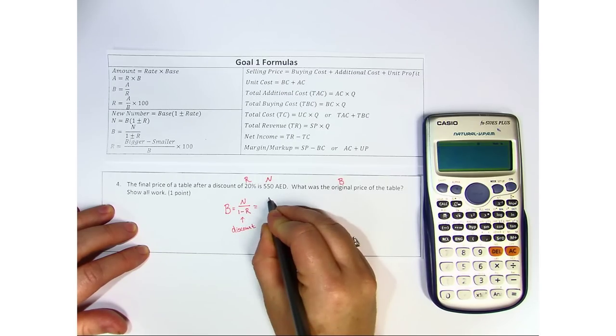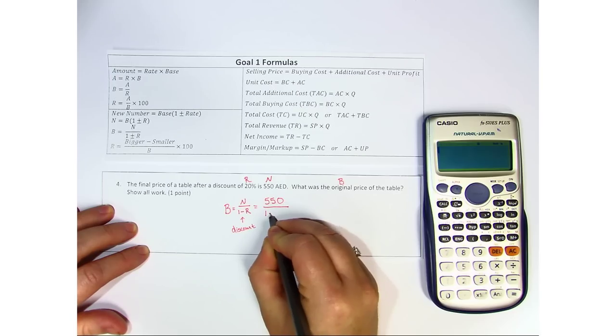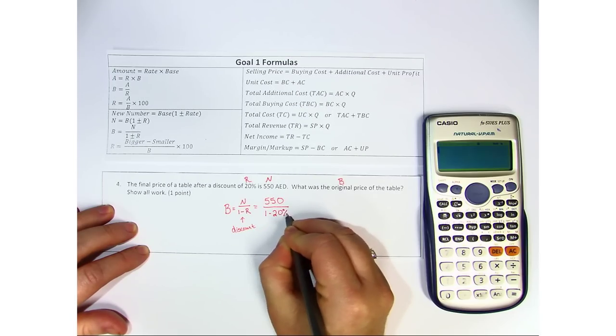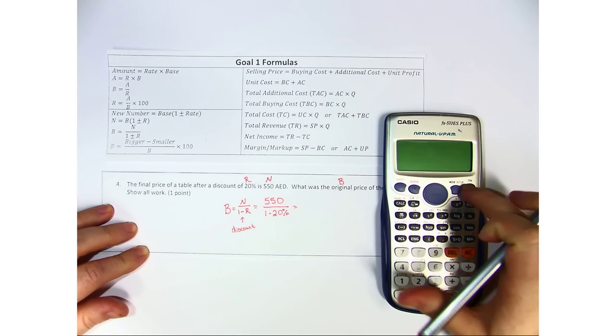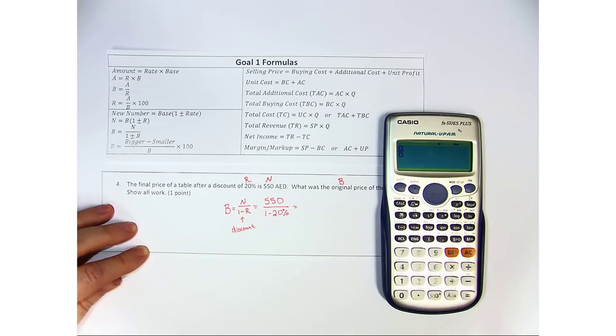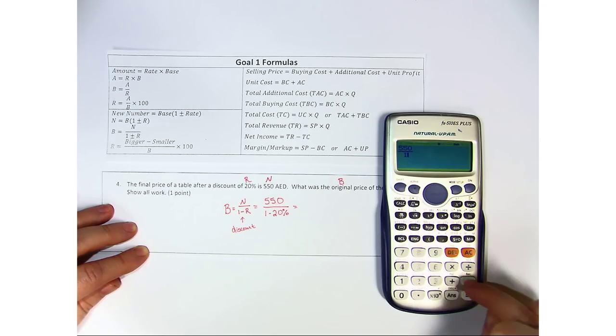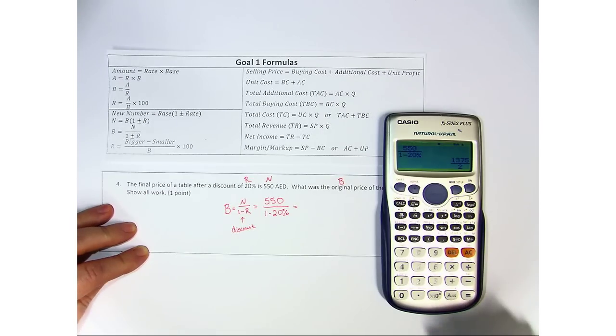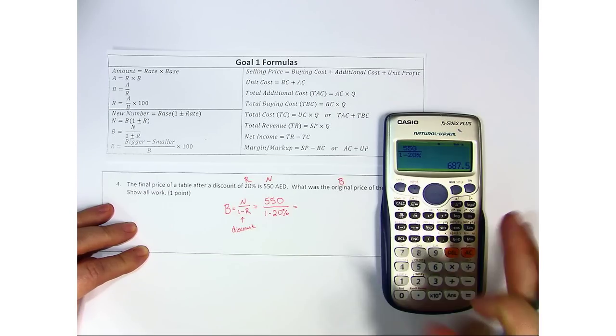All right, so the new number is 550 dirhams. The rate is 20%. So we're going to get our calculator out, turn it on, and we're going to make a fraction. 550 goes on top and 1 minus 20% goes on bottom. So that gives us fraction, hit the SD button, 687 dirhams and 50 fills.